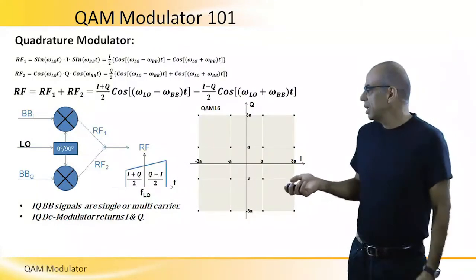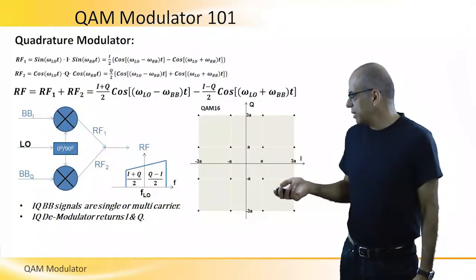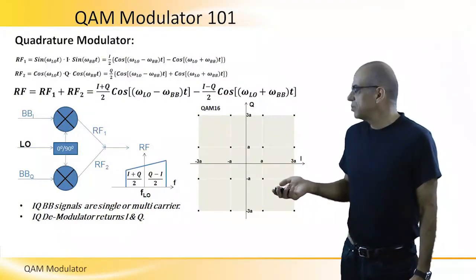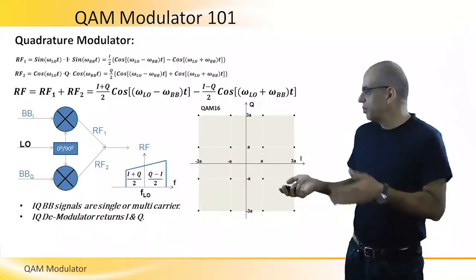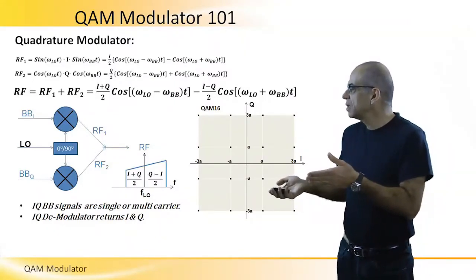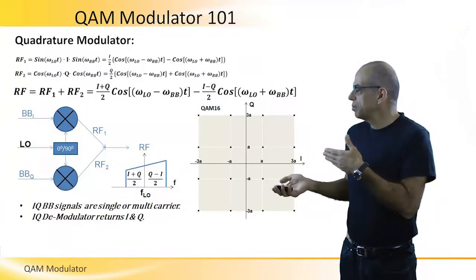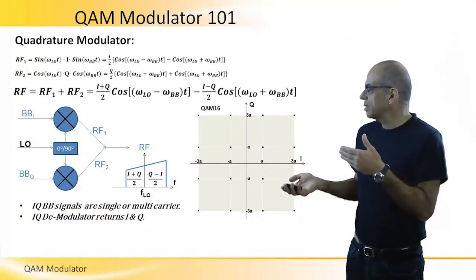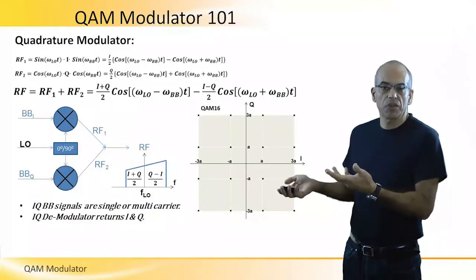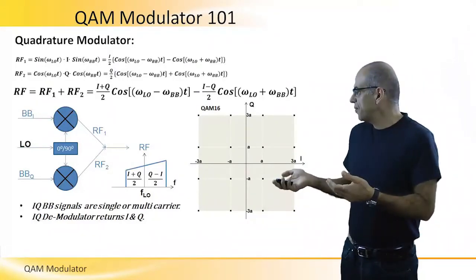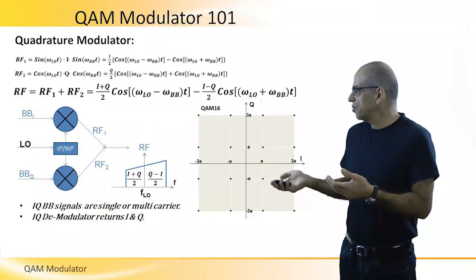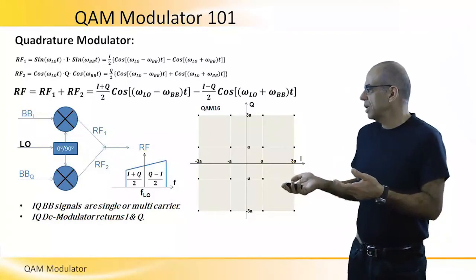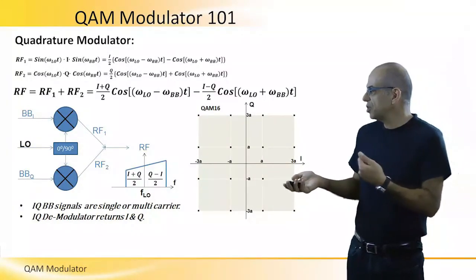By using the QAM modulator we actually create a double sideband RF signal that has the information of both I and Q, and this information can be later on recovered when we do the demodulation.